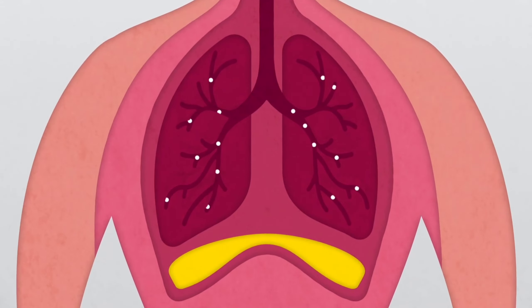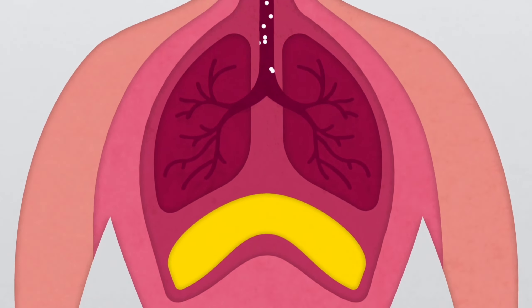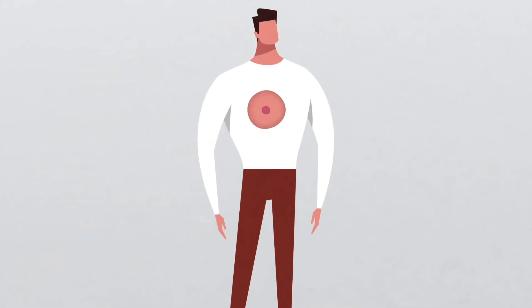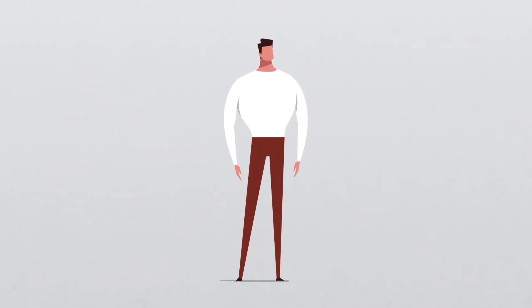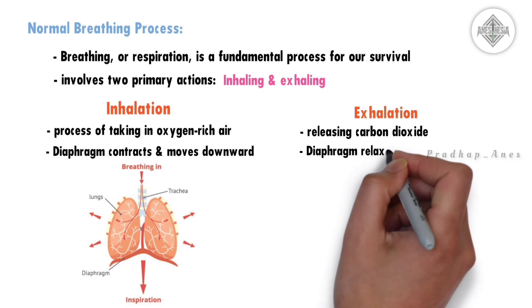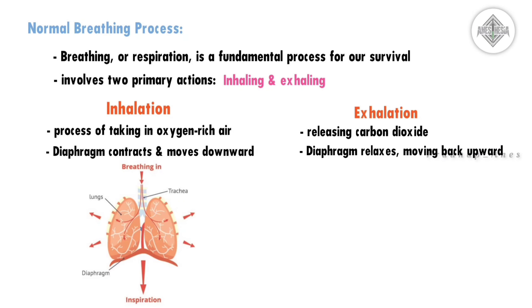During exhalation, the diaphragm relaxes, moving back upward. The chest cavity reduces in size. This forces air, now rich in carbon dioxide, out of our lungs.